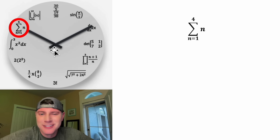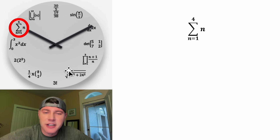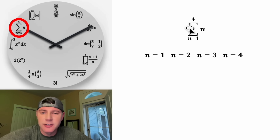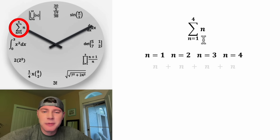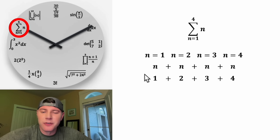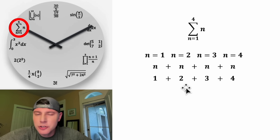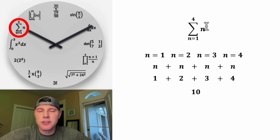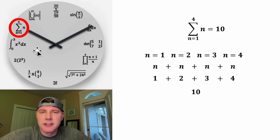Now let's look at this one — it's a summation, similar to the product notation earlier, except we're adding each term instead of multiplying. We have n equals 1, then n equals 2, n equals 3, and we stop at n equals 4. We substitute each value of n into n: 1 plus 2 plus 3 plus 4 equals 10. So this whole thing is equal to 10, and that's why it's in the 10 o'clock spot.